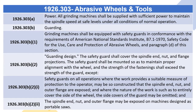1926.303 Abrasive Wheels and Tools. 1926.303(a) Power: All grinding machines shall be supplied with sufficient power to maintain the spindle speed at safe levels under all conditions of normal operation. 1926.303(b) Guarding. 1926.303(b)(1): Grinding machines shall be equipped with safety guards in conformance with the requirements of American National Standards Institute B7.1-1970, Safety Code for the Use, Care, and Protection of Abrasive Wheels, and paragraph (d) of this section.